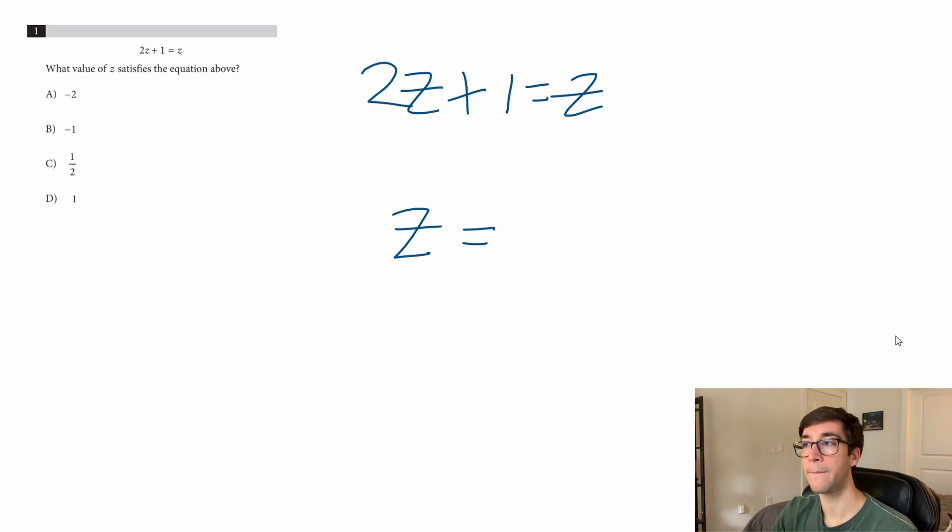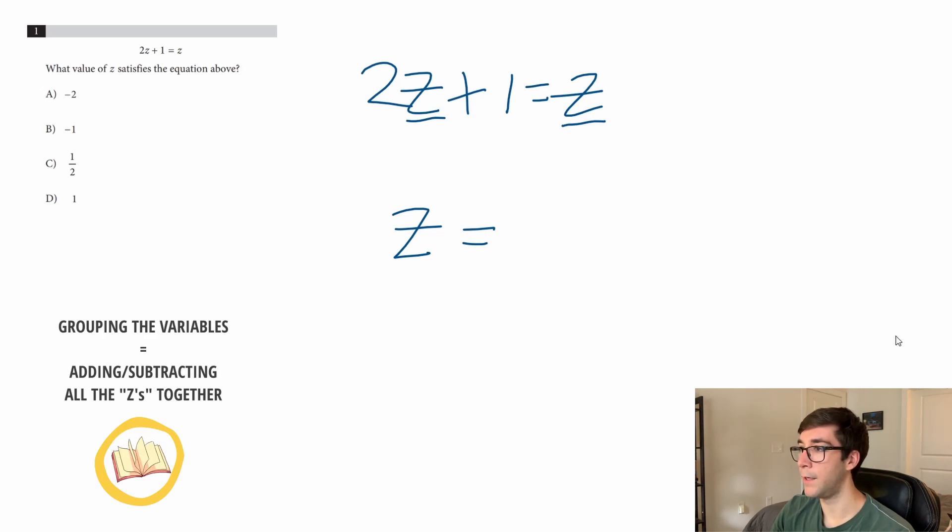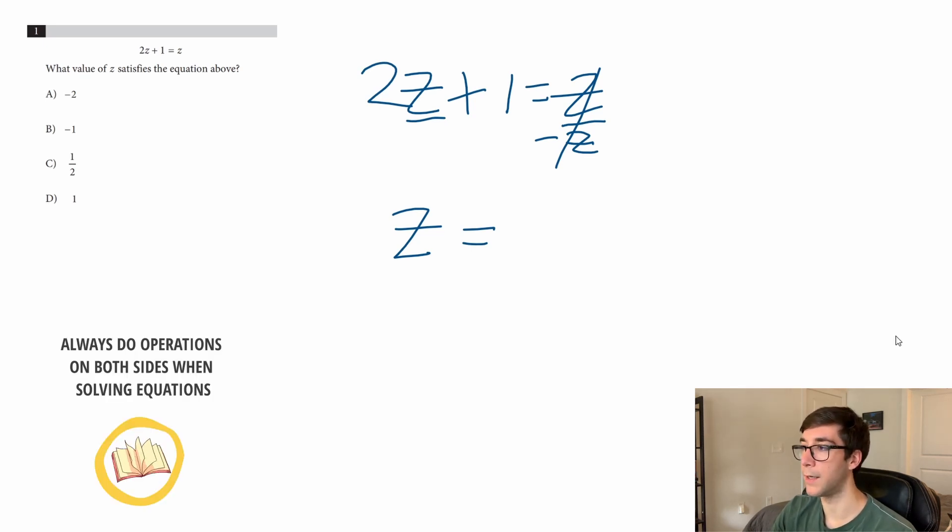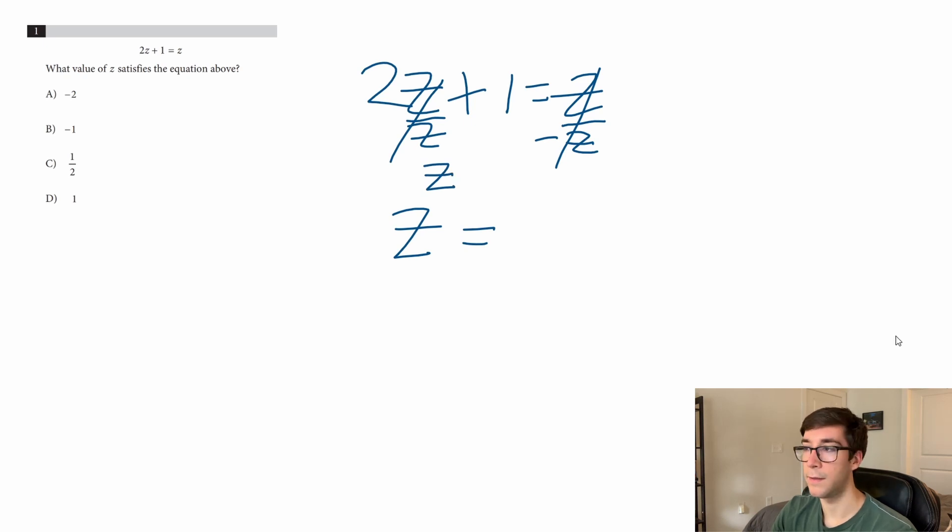When that's the case, group all the variables together. I'll subtract z from both sides because anything you do to one side you have to do to the other. 2z - z is z, so we have z + 1 = 0. Now subtract 1 from both sides: z = -1. So our answer is -1. Again, with all equations you want to isolate the variable by slowly removing everything else.